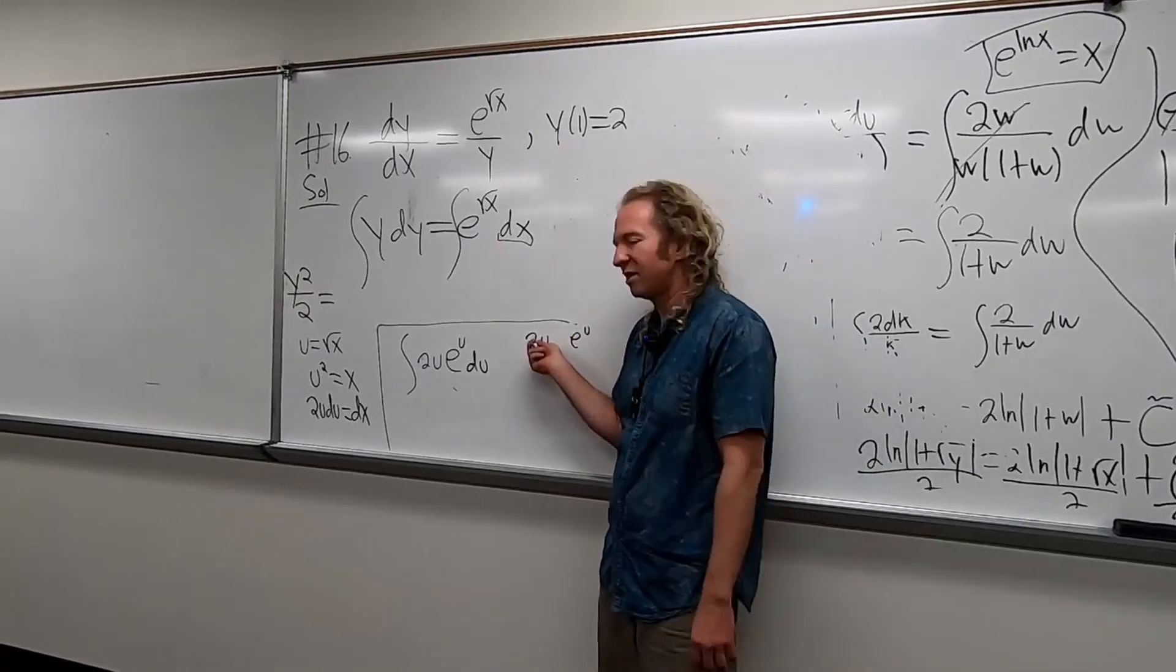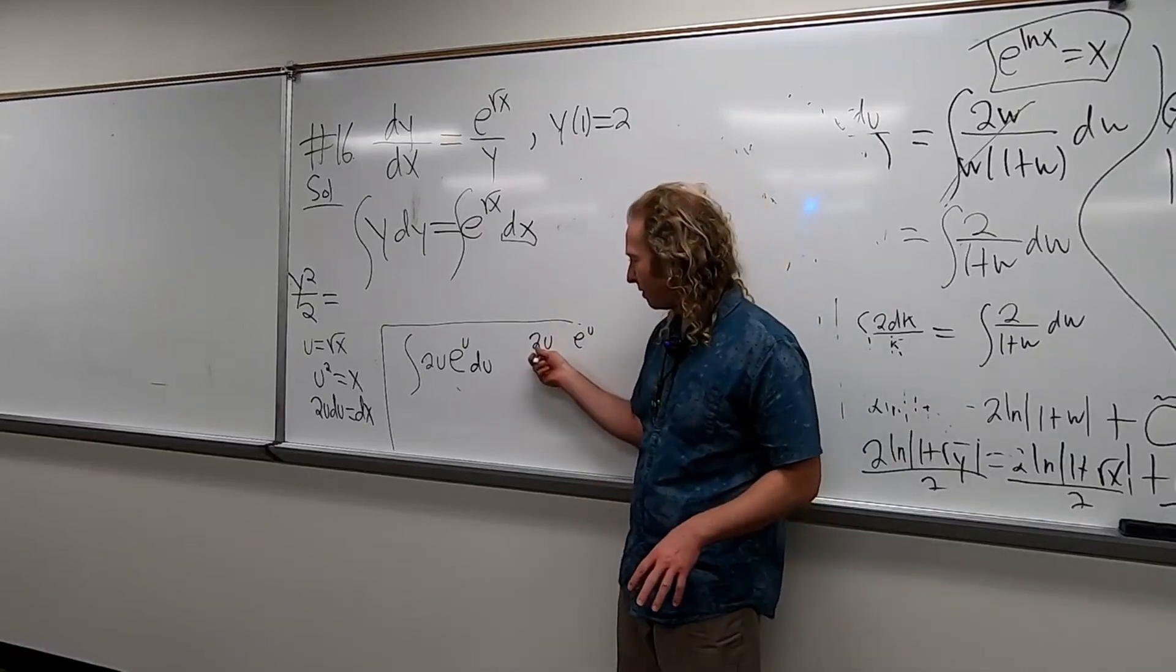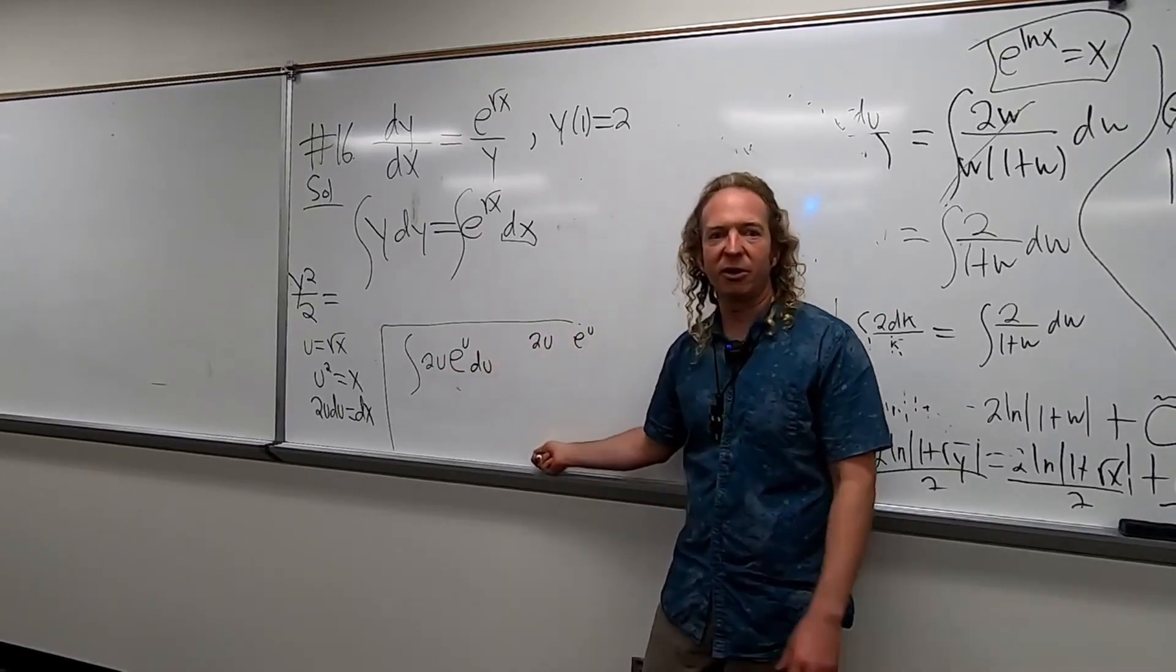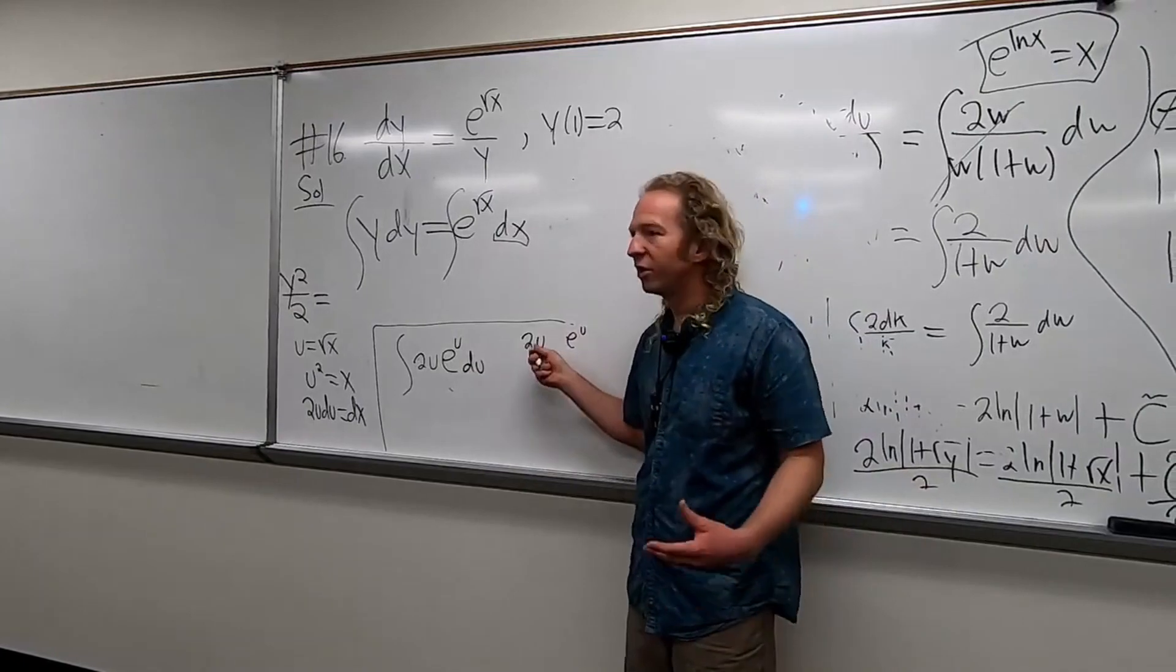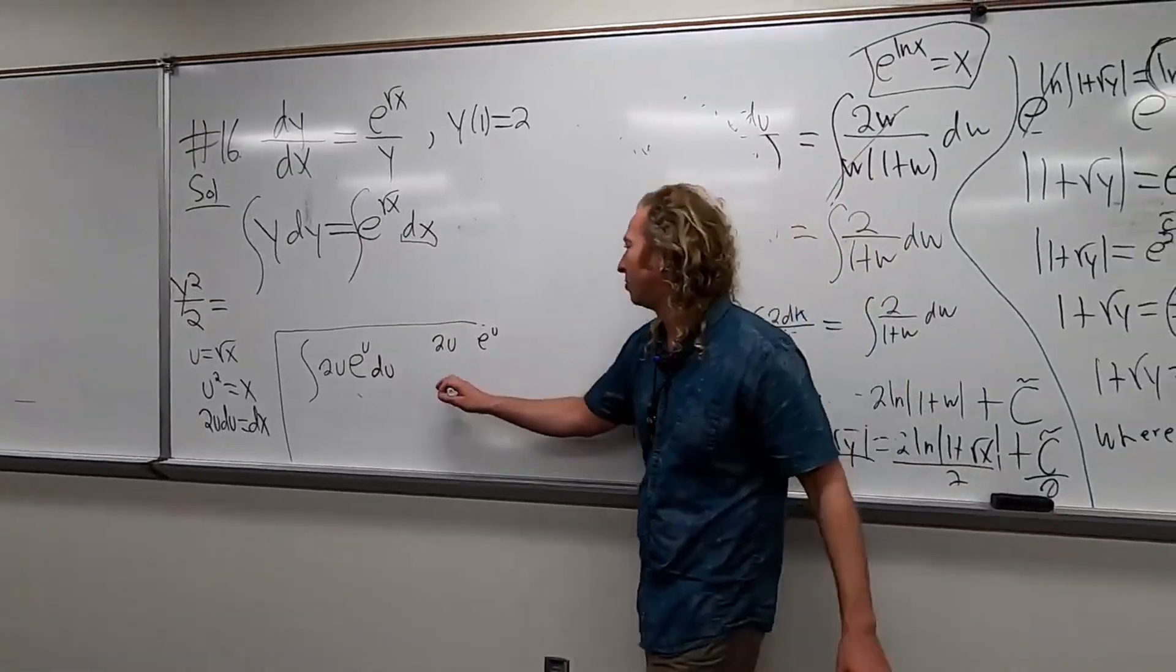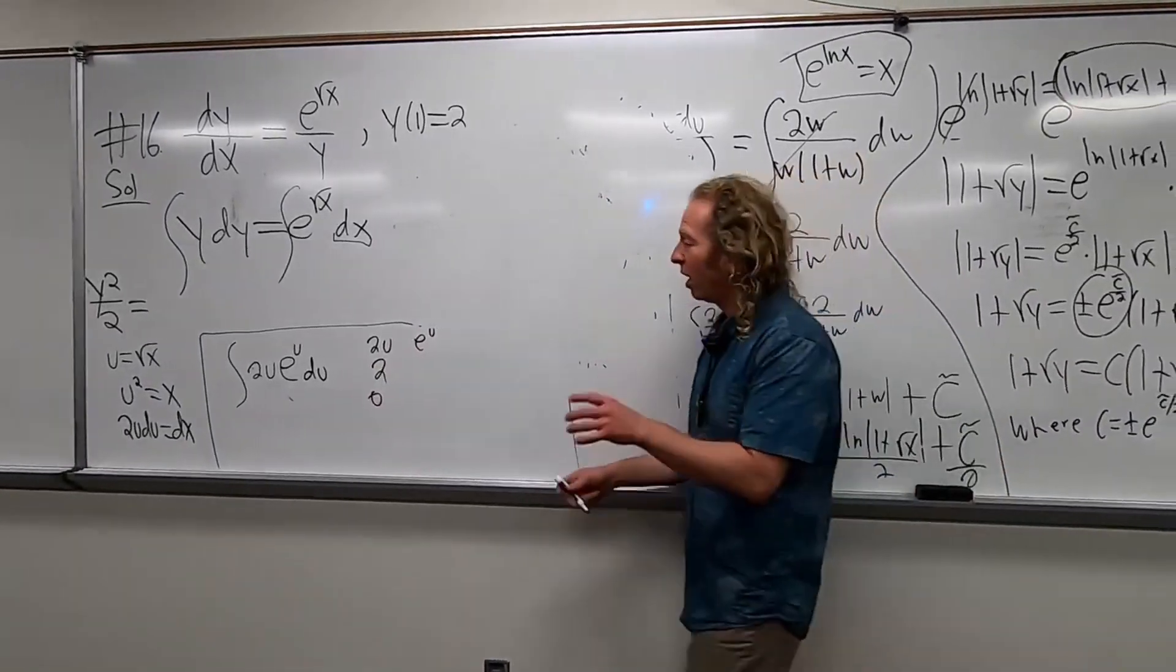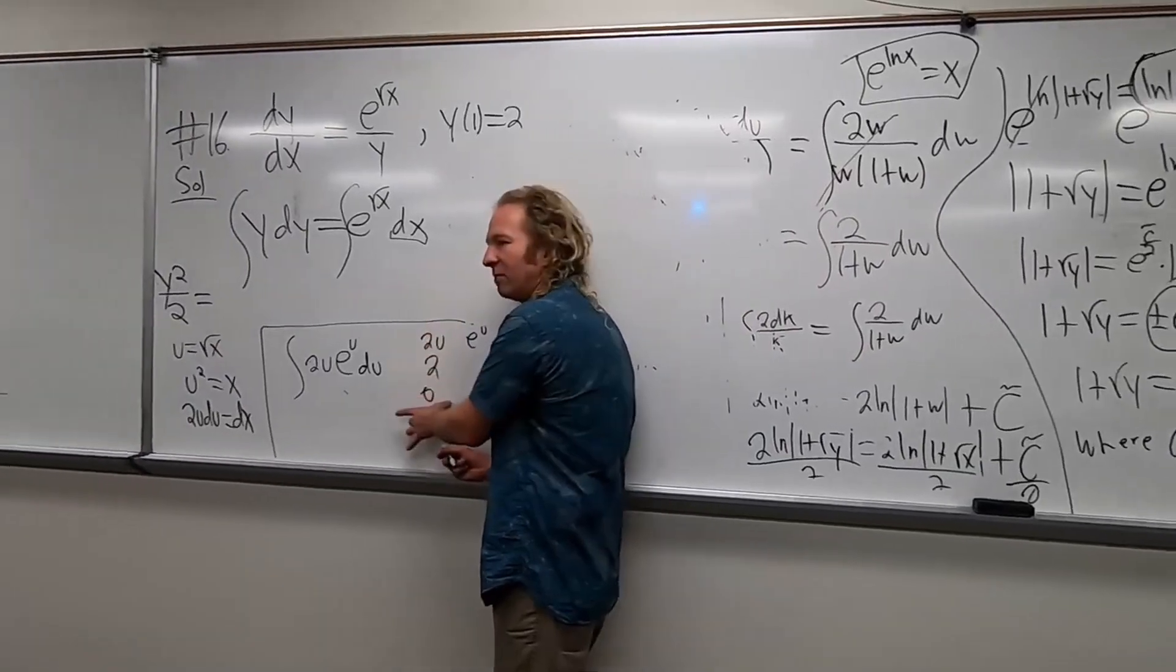So let me just show you how to do it. You pick the piece that you're going to differentiate. So you need to pick something that eventually is zero. So 2u. If you keep differentiating that, eventually it's going to be zero. And then the other piece, you're going to keep integrating it. One of the pieces has to be eventually zero.